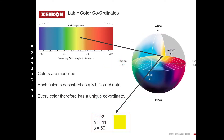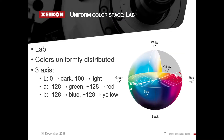We need to understand what LAB is before we can understand what Delta E is. The L, A, and B each represent a position in three-dimensional space — we model colour into a three-dimensional space. L stands for the axis of light to dark, A is an axis going from green to red, and B is an axis going from blue to yellow. Every colour can be described with a unique set of coordinates.